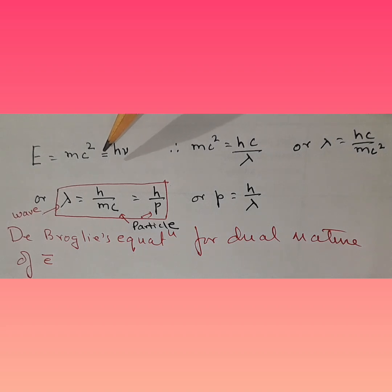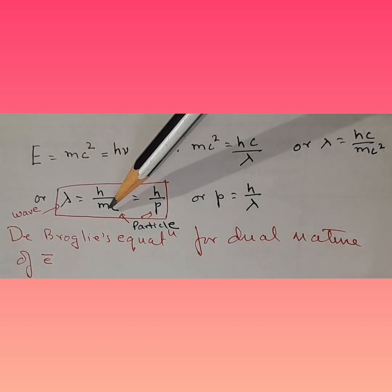We also know that E is equal to h nu and we know that nu is c over lambda. So we substitute it there. So mc square is equal to hc over lambda. Now, if I take lambda there and mc square down below here, then what happens is one c gets cancelled and we end up with lambda is equal to h over mc.